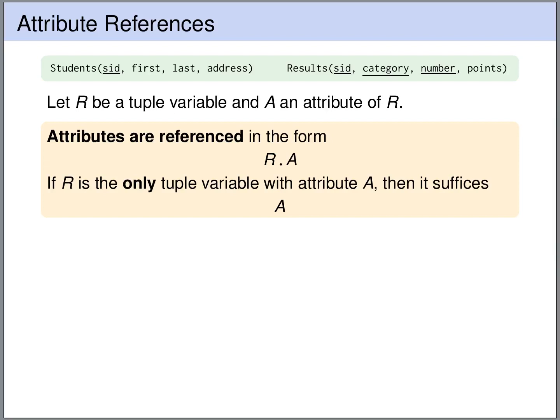Let R be a tuple variable and A an attribute of R. Then, as we've seen on the last slide, we can refer to this attribute by writing R.A. If R happens to be the only tuple variable that contains the attribute A, then we can also simply write A.